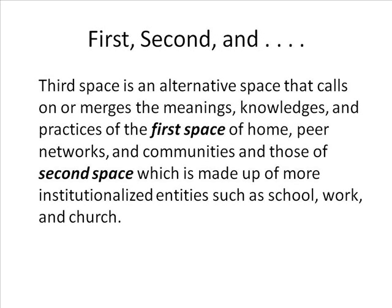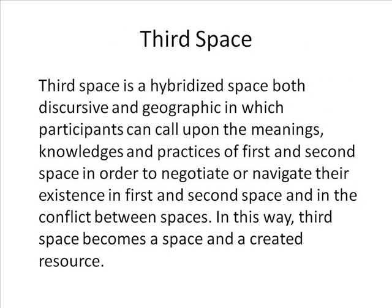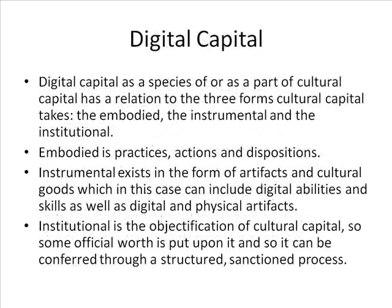First space is a space that calls on or merges the meanings, knowledges, and practices of the home or peer networks and communities, largely informal. Second space is made up of more institutionalized entities such as school, work, and church. There have been many conceptualizations of third space — originally thought of as a geographic space between home and school or home and some colonial entity. Others have characterized it as a discursive space. We are conceptualizing it as a hybridized space, both discursive and geographic, in which participants can call upon the meanings and practices of first and second space in order to negotiate or navigate their existence and the conflict between spaces. Third space is then a resource and an actual discursive and geographic space.